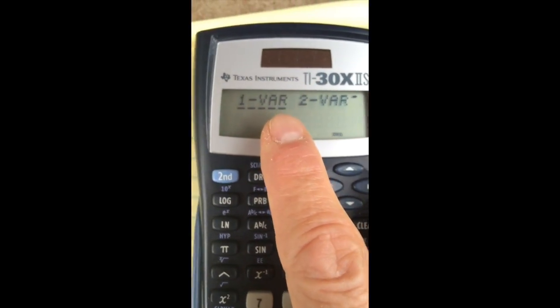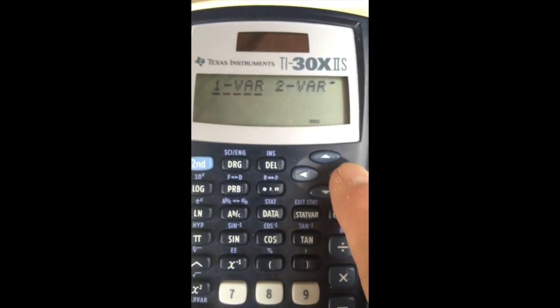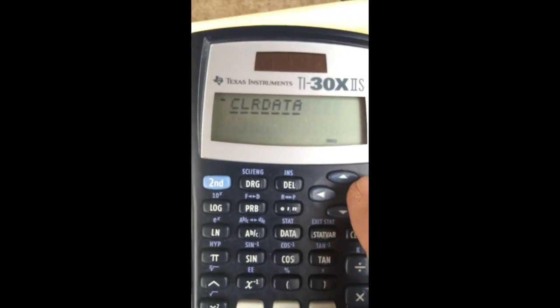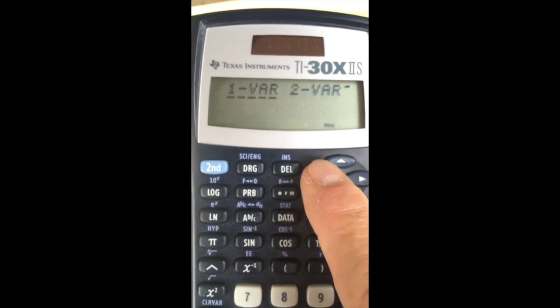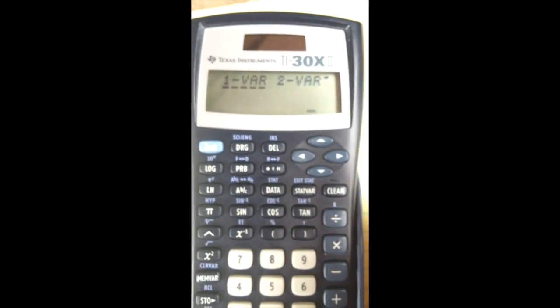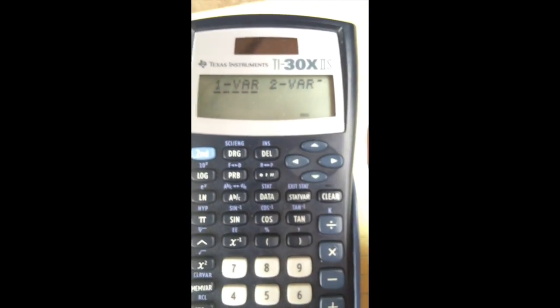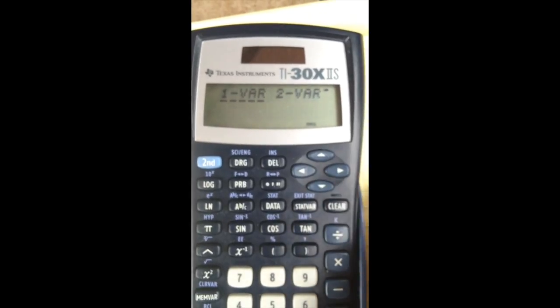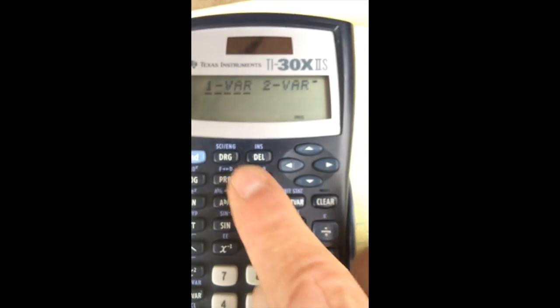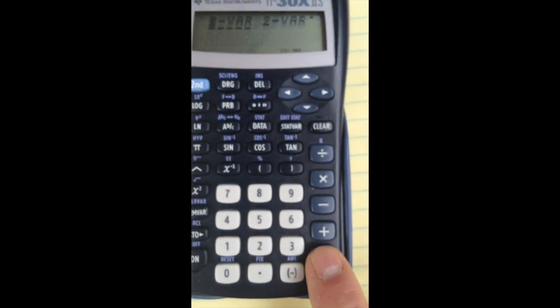It asks, do I want one variable or two variables? Now, this is important. Look at this right arrow, and if I go over one more, it says clear data. This is a great little calculator, but you can only have one set of data at a time. So you have to remember after each set of data to clear it, so you're ready for the next. We're just working with one variable stat, so we hit enter.